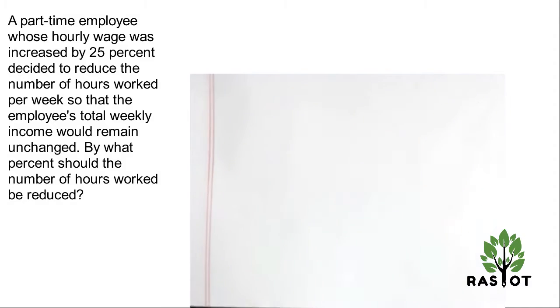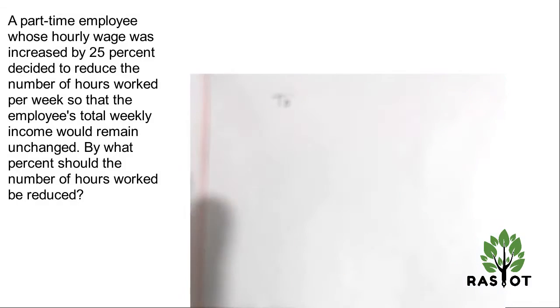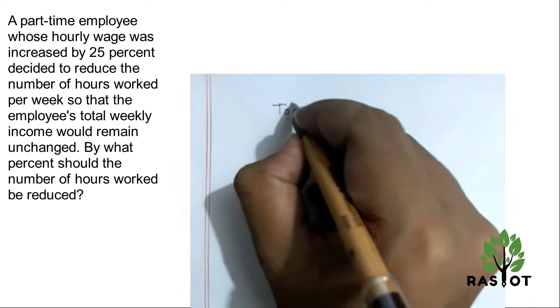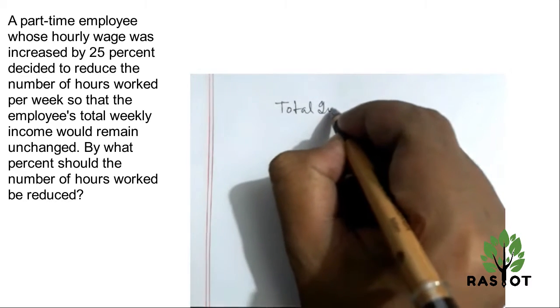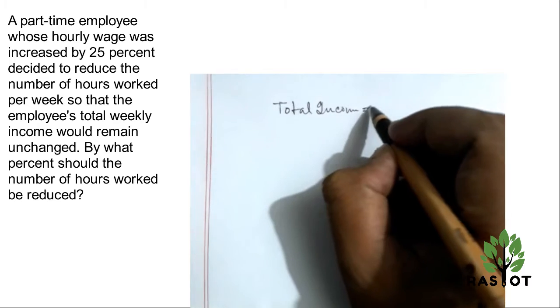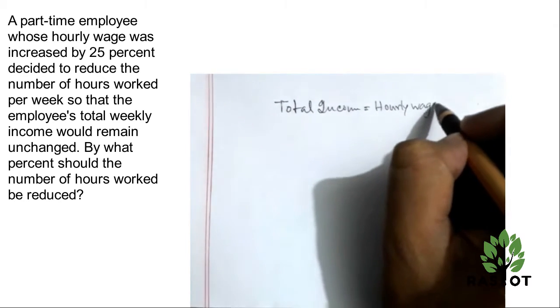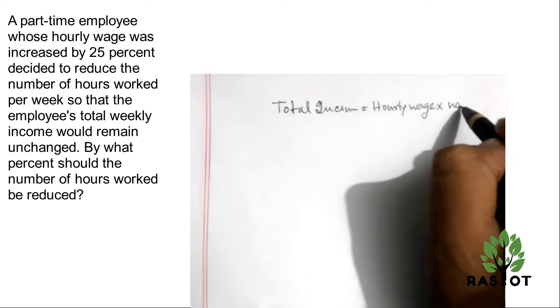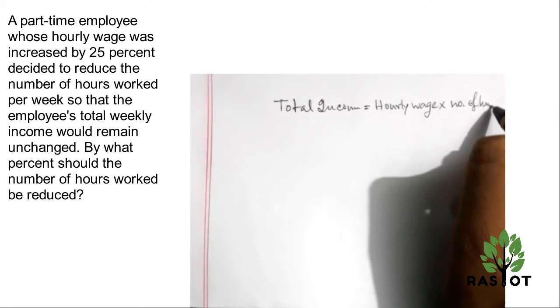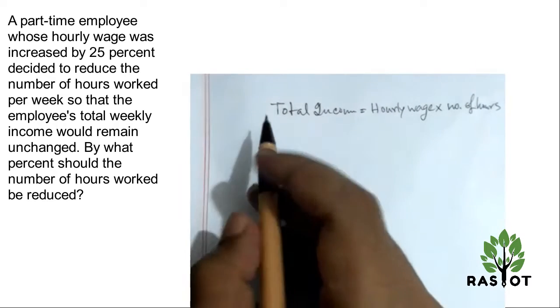Okay, so the total income that we have - total income is equal to the hourly wage times the number of hours. For the original case, I'm going